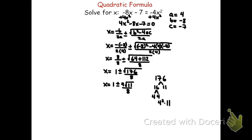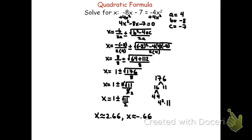Simplifying the fraction 4 root 11 over 8: since 4 goes into 8 twice, we get x equals 1 plus or minus root 11 over 2. That's the exact answer. To approximate: typing in 1 plus root 11 divided by 2 gives about 2.66, and 1 minus root 11 divided by 2 gives about negative 0.66. Those are the two solutions — the two numbers that when plugged into the equation give zero. Later on, we'll find that these are also the x-intercepts of y equals 4x squared minus 8x minus 7. I hope this helps you understand the quadratic formula — thank you for watching.